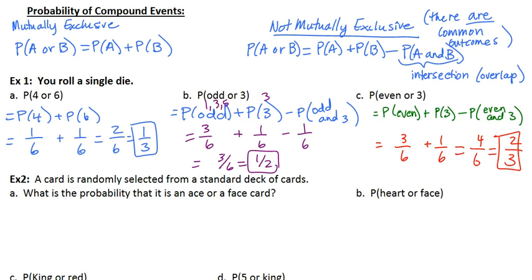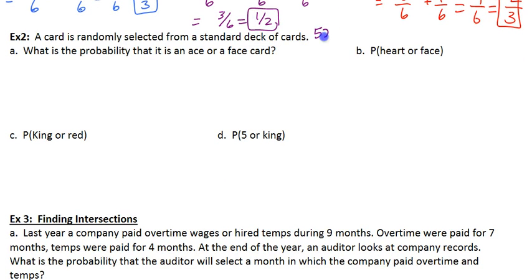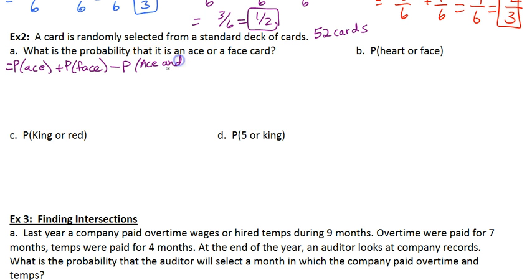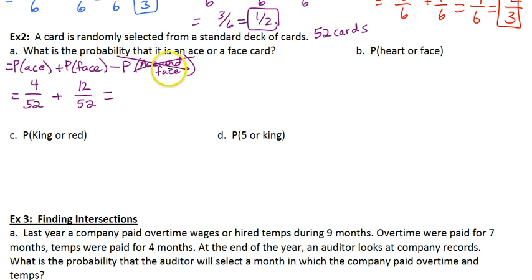Look at example 2. A card is randomly selected from a standard deck of 52 cards. What is the probability that it is an ace card or a face card? I want the probability of ace plus the probability of face, and I'll subtract off the probability of ace and face. An ace card and a face card are mutually exclusive — you can't have both at once. Probability of an ace: there are 4 of them. Face cards: there are 12 of them. There is actually no overlap, so that would be subtracting off 0. My final answer is 16 over 52, which reduces to 4 thirteenths. You do need to reduce your answer every time.